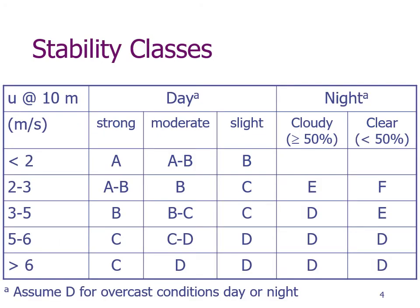Going back to this table, think about what the current atmospheric stability class is. I'm looking outside — it's a winter day. The wind is really calm, so it's probably less than two meters per second. It's late in the afternoon, so our solar radiation is probably slight. Given that combination of wind speed and solar radiation, I'd estimate that our stability class is B, which is moderately unstable.